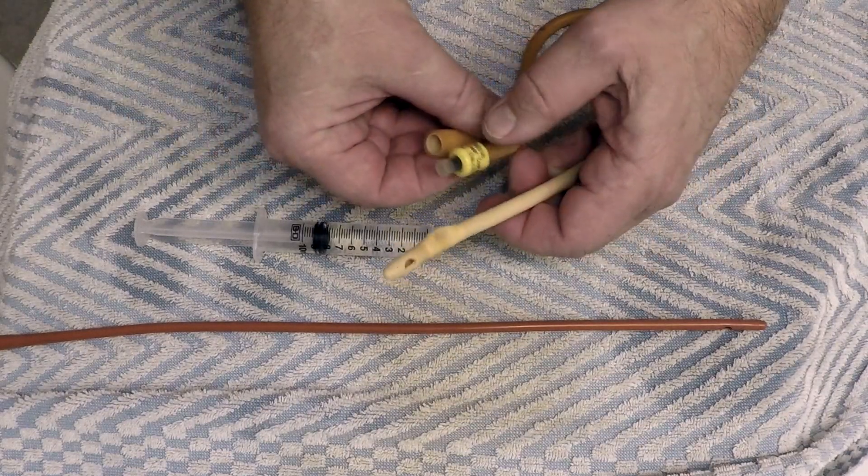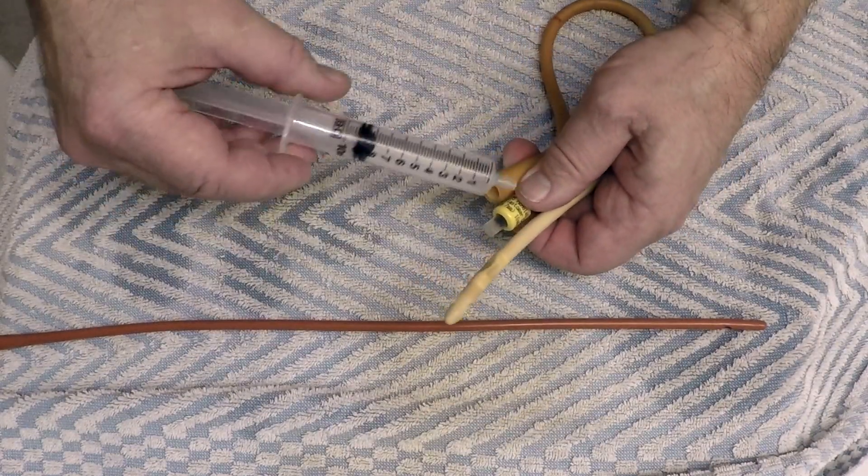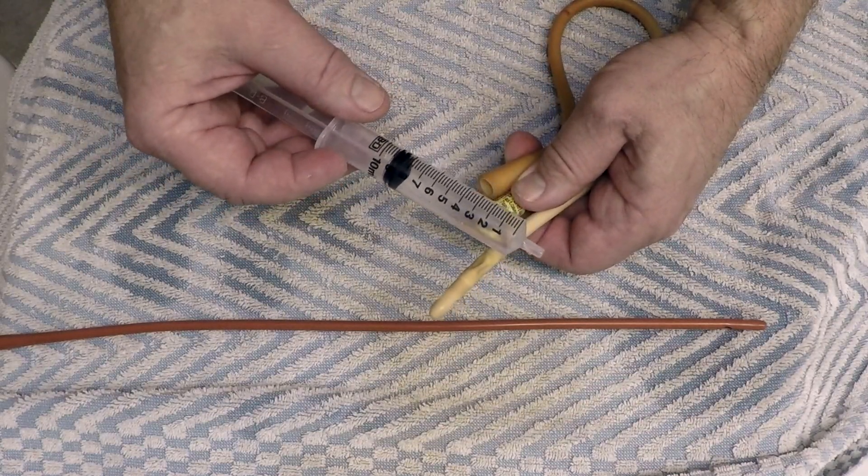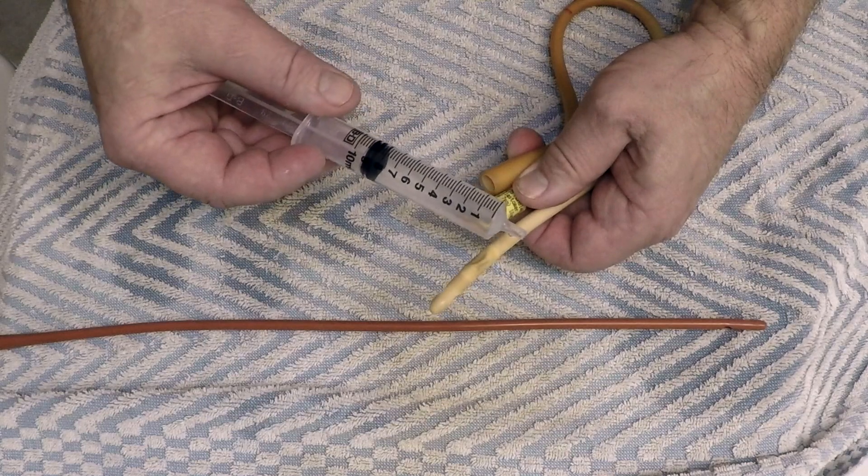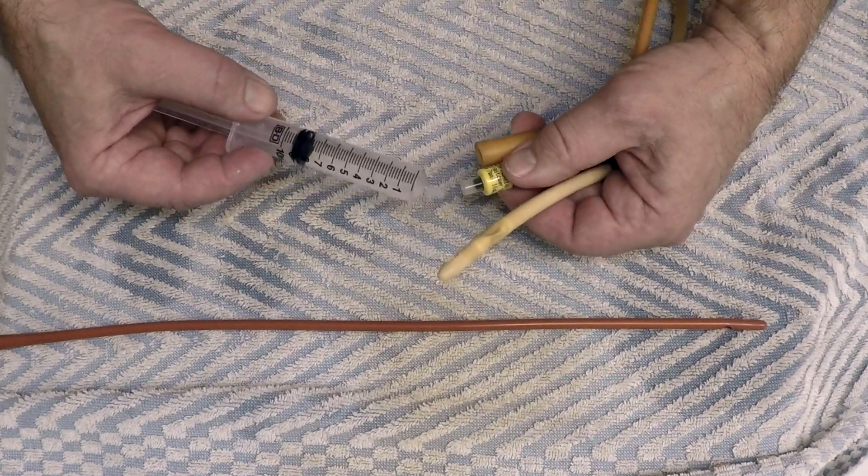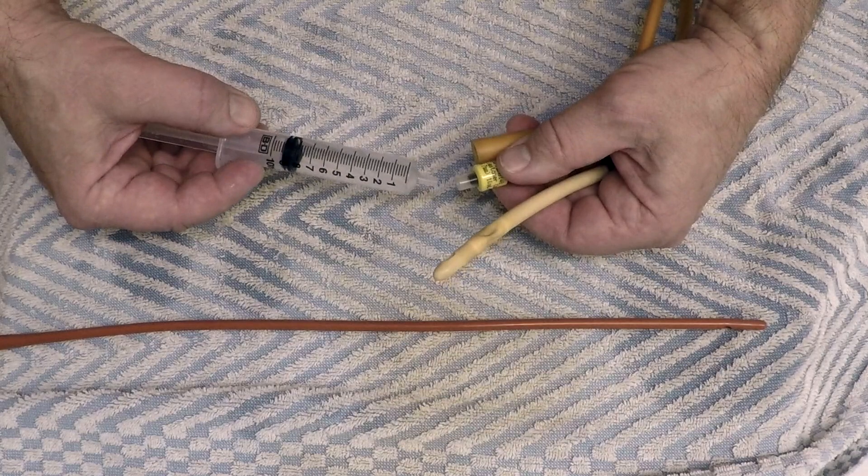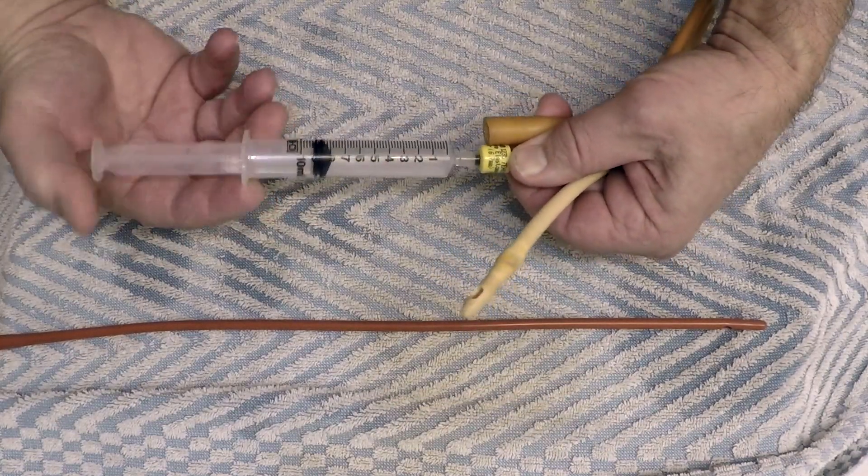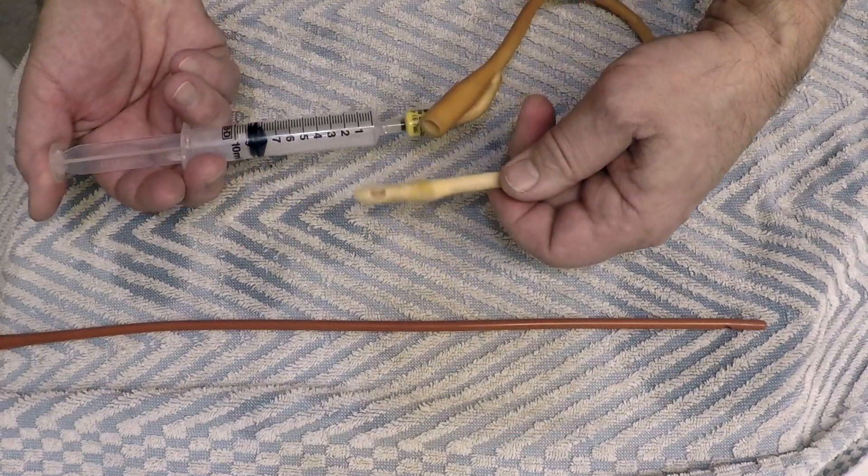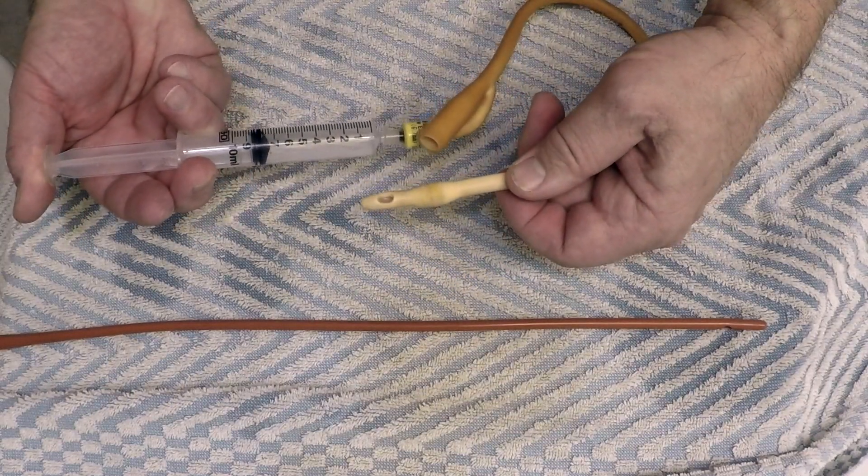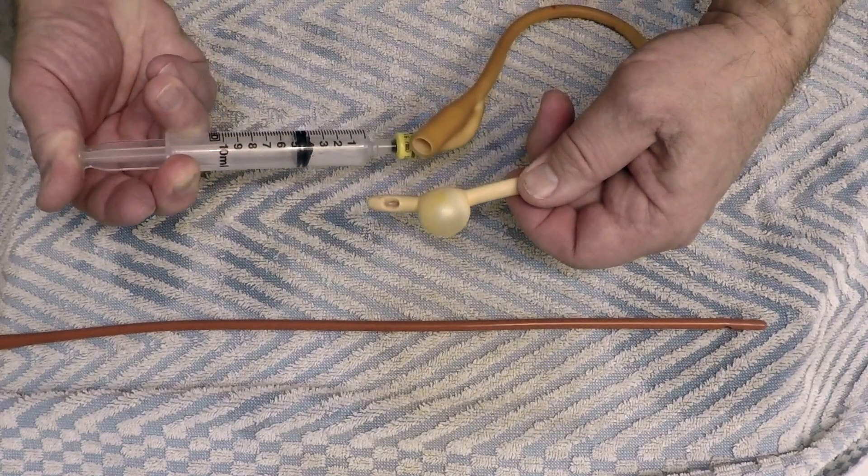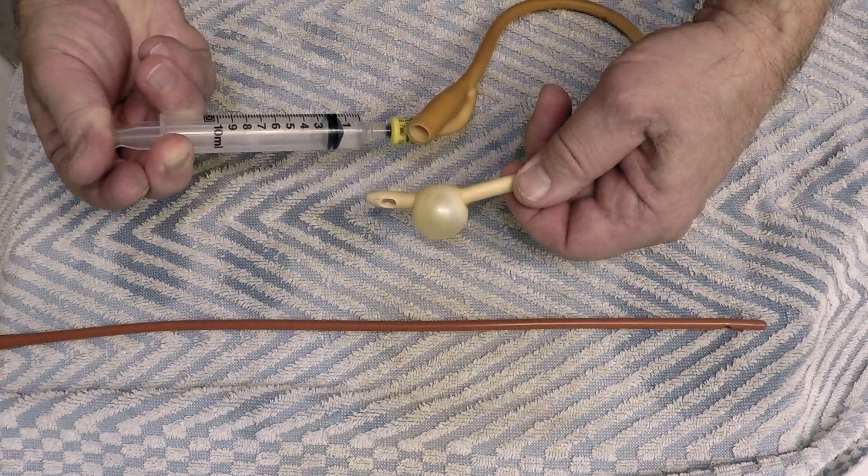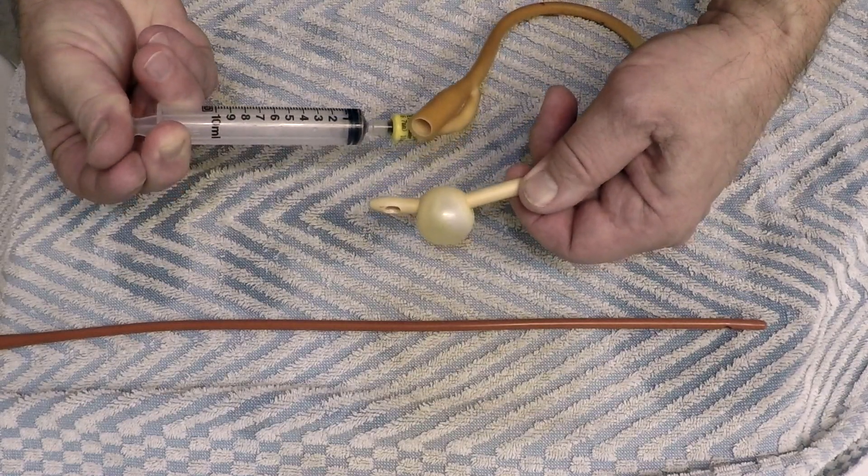So what I'm going to do is reinflate this. Here's the syringe with about 8.5 milliliters of liquid that I removed in order to remove the Foley catheter. I'll just put this back in and we'll see how big this gets.